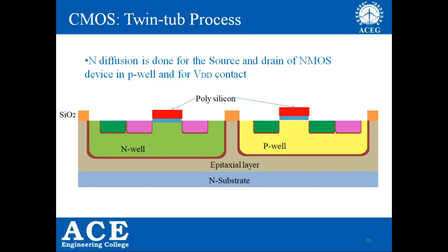After P-diffusions, we proceed with N-diffusions. N-diffusions are required for the formation of source and drain in the N-MOS transistor and also for the VDD contact. Just as we require the VSS contact, we require a VDD contact: instead of connecting the entire N-well to the drain, we form a small N-diffusion region to connect to VDD — that is the VDD contact.